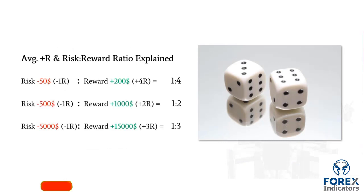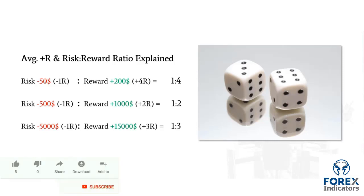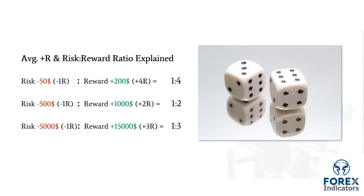There's a big debate — not amongst professionals — about risking a fixed dollar amount. I'll show you with many scenarios that that's not the path you want. You want a fixed percent of equity at risk at any point in time. For example, if you're risking $50 on the next trade, that's one R. If you're going for a target four times that — so $200 — your risk-to-reward is one to four, or you simply say you're going for four R. Average plus R is a simpler expression: one number, implying you're always risking one R.